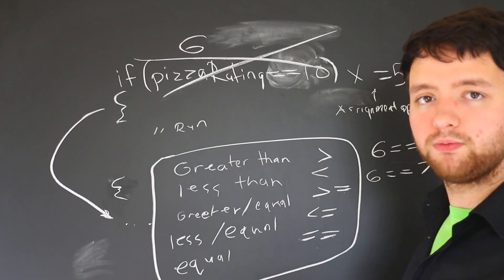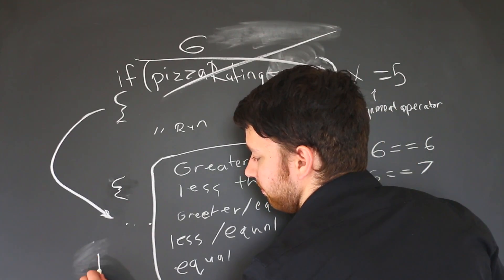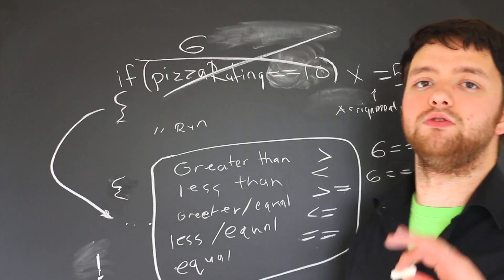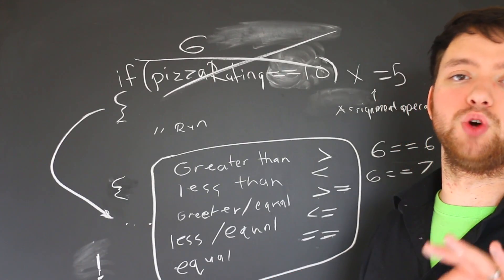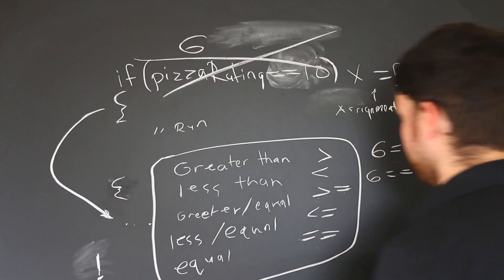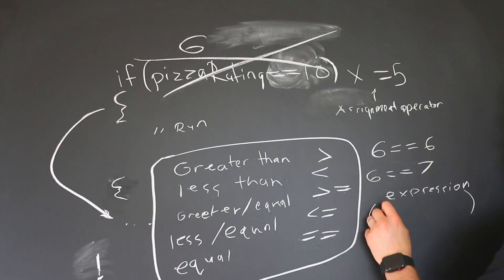So these are the important operators that you need to know about. There is one more thing you should know, and that is in general you can use this exclamation mark, which is the negation operator, which is going to basically flip the true or false value of anything. So this could be applied to something in parentheses. Let's say likesPizza, or actually you don't even need the parentheses in this situation.